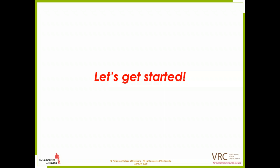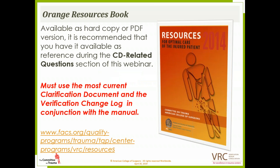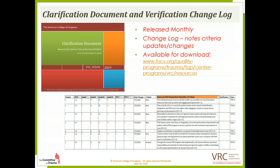Firstly, the Orange Resources book. This is available as a hard copy or a PDF version. We highly recommend that you have this available as reference during the CD-related questions section of this webinar. We also recommend using the most current clarification document and verification change log in conjunction with the manual. The change log notes any criteria changes or updates, and the clarification document provides explanations and elaborations of the criteria. These are released monthly.